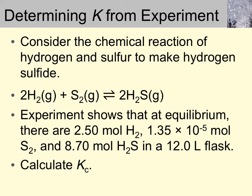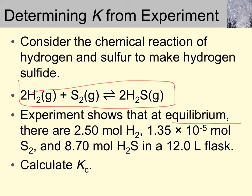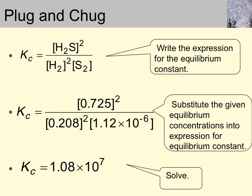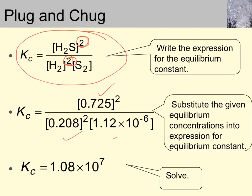It's easiest to teach by using an example. A typical plug-and-chug problem would be that you're given the equilibrium reaction and the equilibrium concentrations of the products and reactants. Then, as long as you write the correct equilibrium expression — remember that coefficients become exponents — it's simply a matter of plugging in the correct concentrations and calculating. Remember that K is unitless.